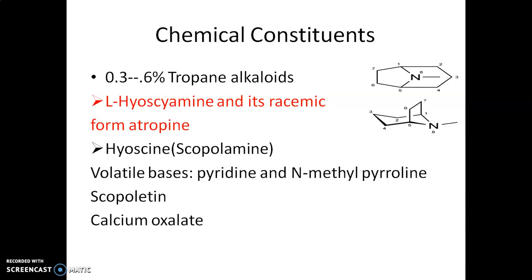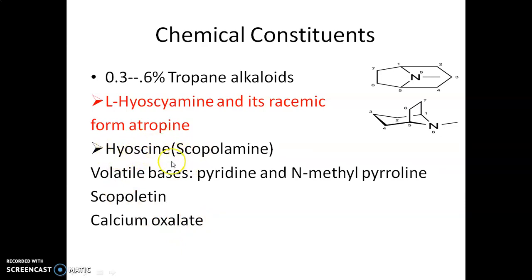The chemical constituents present in this drug are 0.3 to 0.6% tropane alkaloids, the major alkaloid being hyoscyamine — specifically levo-hyoscyamine — and its racemic form known as atropine. It also contains a very small amount of hyoscine, which is not quite significant. Additionally, it contains volatile bases like pyridine, N-methylpyroline, scopoletin, coumarin derivatives, and a high amount of calcium oxalate. The hyoscine content is very negligible or sometimes absent.